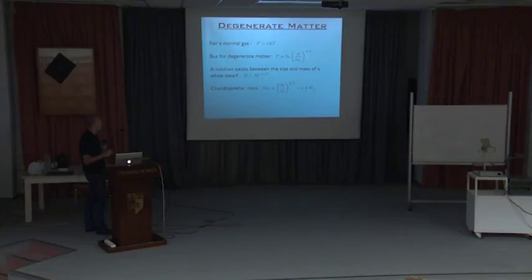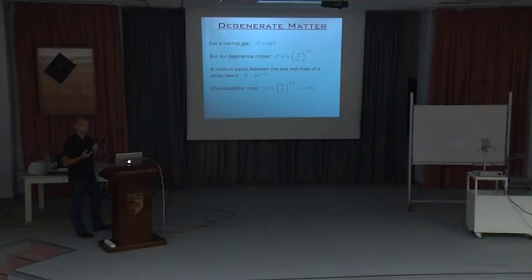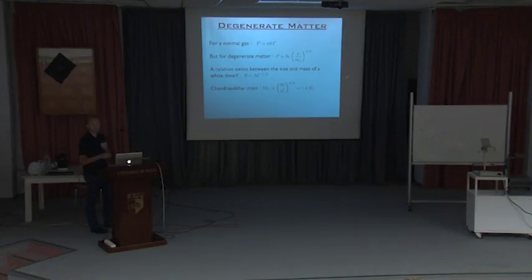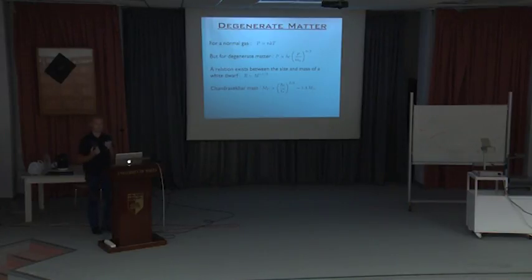There's a nice relation between the size and mass of a white dwarf. In the early 1900s, Indian physicist Chandrasekhar derived the maximum mass a white dwarf can have — considered one of the most beautiful results in physics because it's expressed purely in fundamental constants: Planck's constant, the speed of light, and Newton's gravitational constant. This gives a maximum mass of 1.4 solar masses. As long as an object is less than 1.4 solar masses, it can exist as a white dwarf.